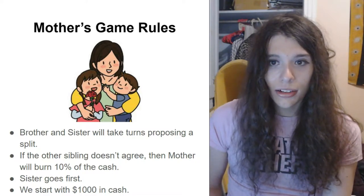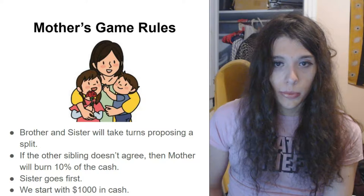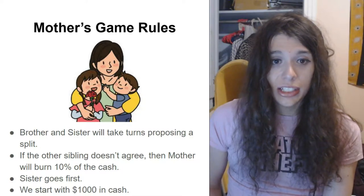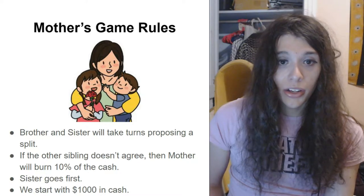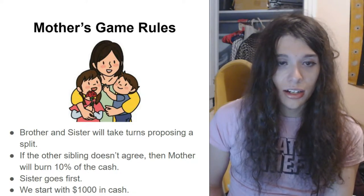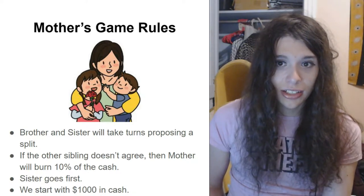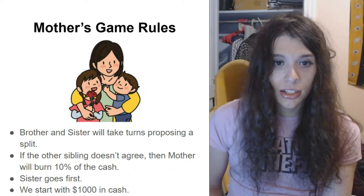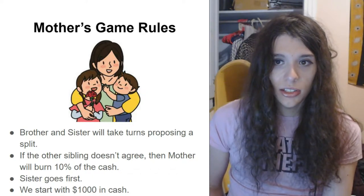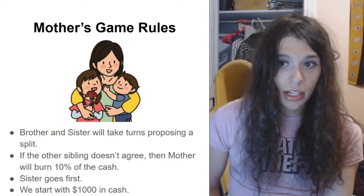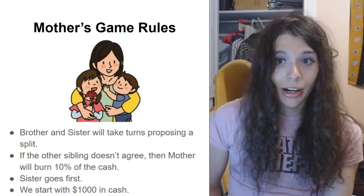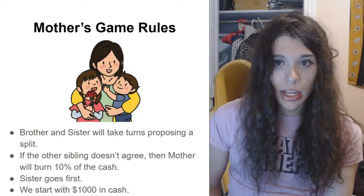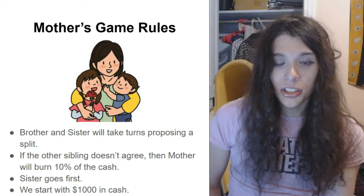So to play this out, Sister will have to propose the split first. If her brother does not agree to how she wants to split up the $1,000, then Mother will burn $100 and leave us with $900 left. Brother then has a shot to determine how much he wants to split up the $900. And if sister doesn't agree with what brother wants to split, then Mother will burn $90, 10%, and we're going to have $810.